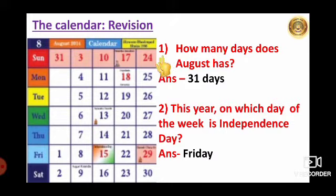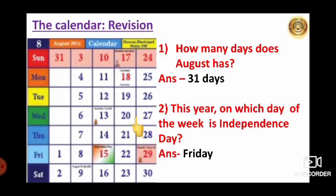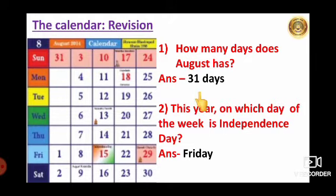Now let us start with our first question. How many days does August have? How many days can you see here? Total 31 days. So August has 31 days.